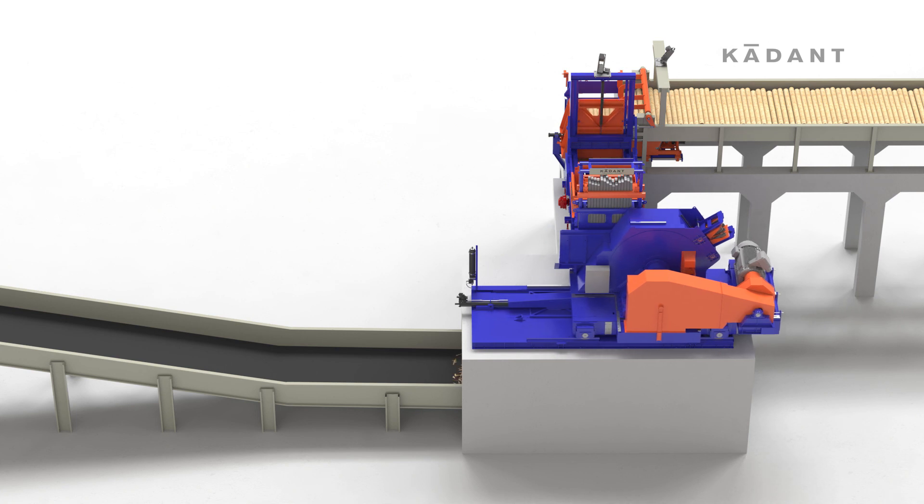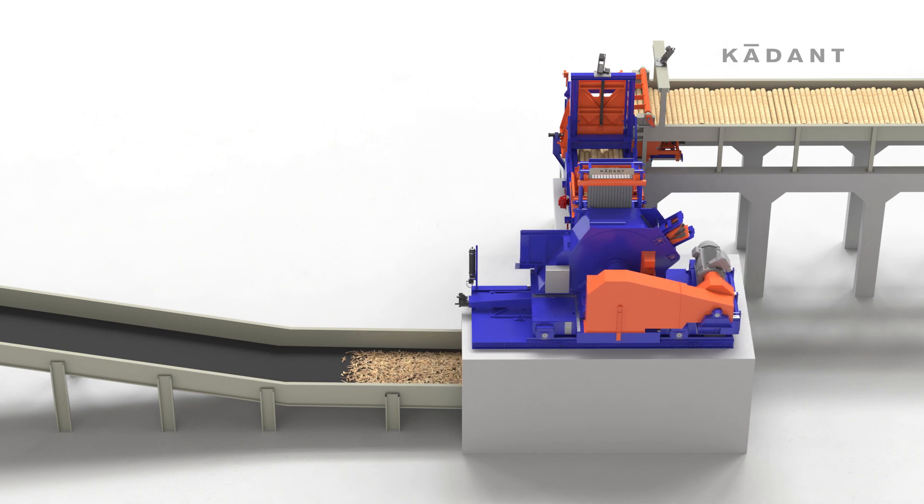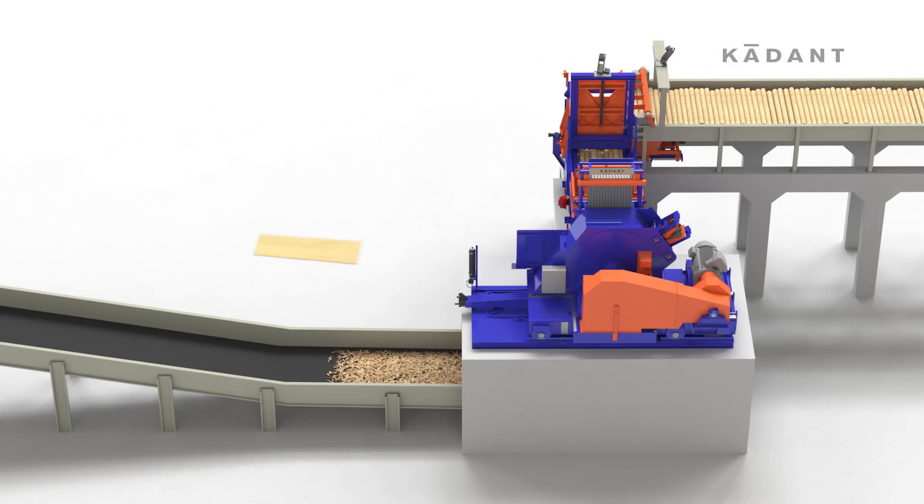OSB producers rely on consistent strand geometry to produce high-quality panels which conform to industry standards. Variances in strand thickness, length, and width can have significant impacts on downstream manufacturing processes and the final OSB panel properties.